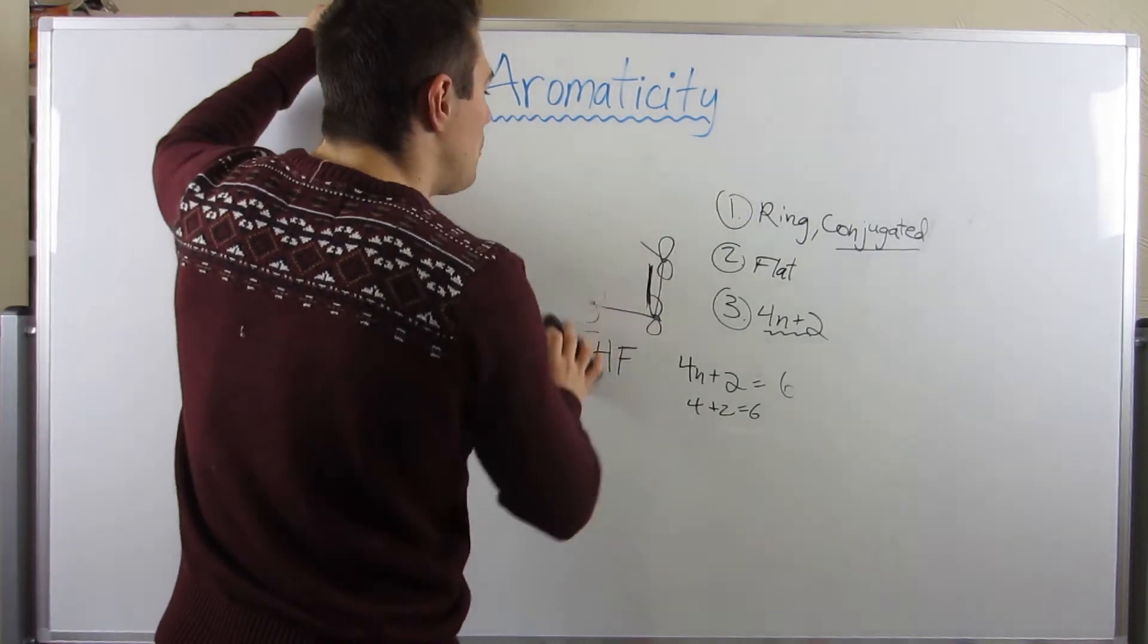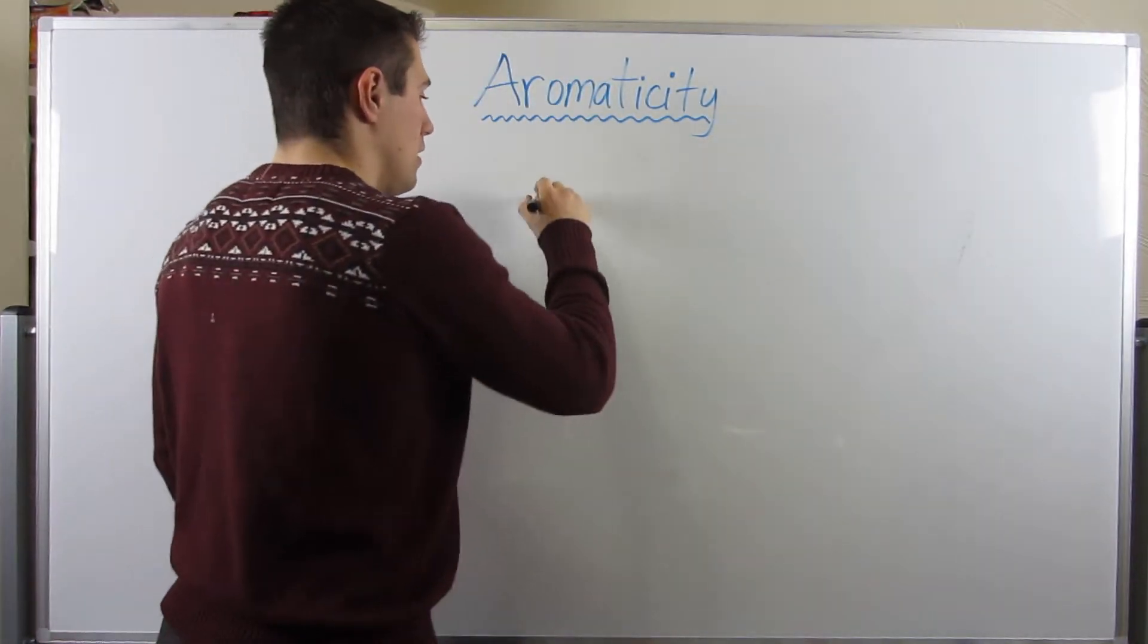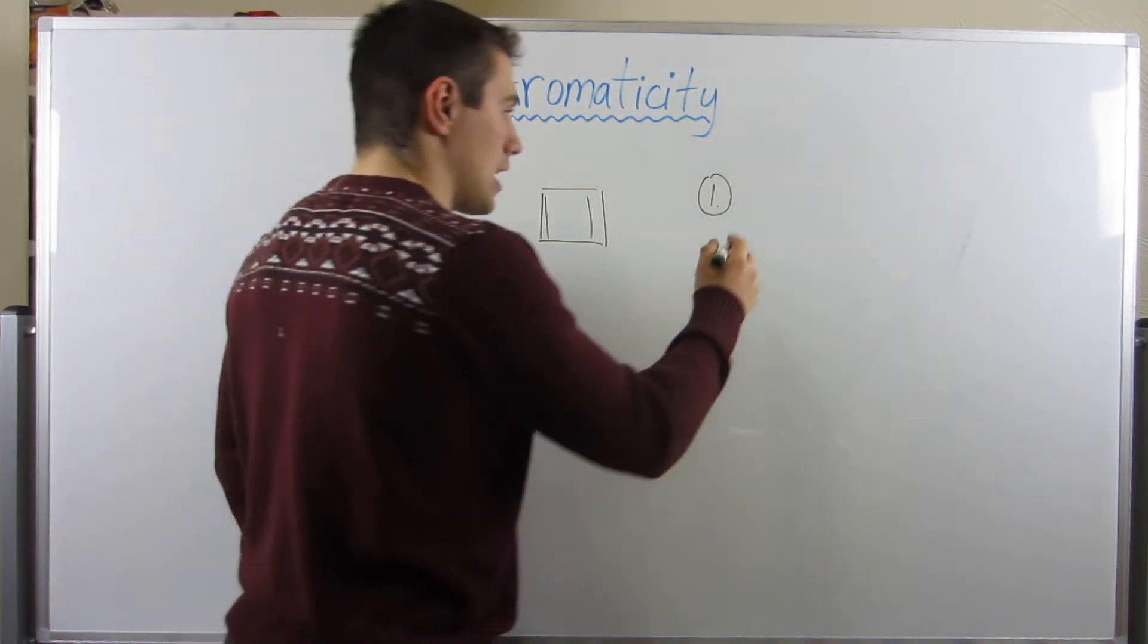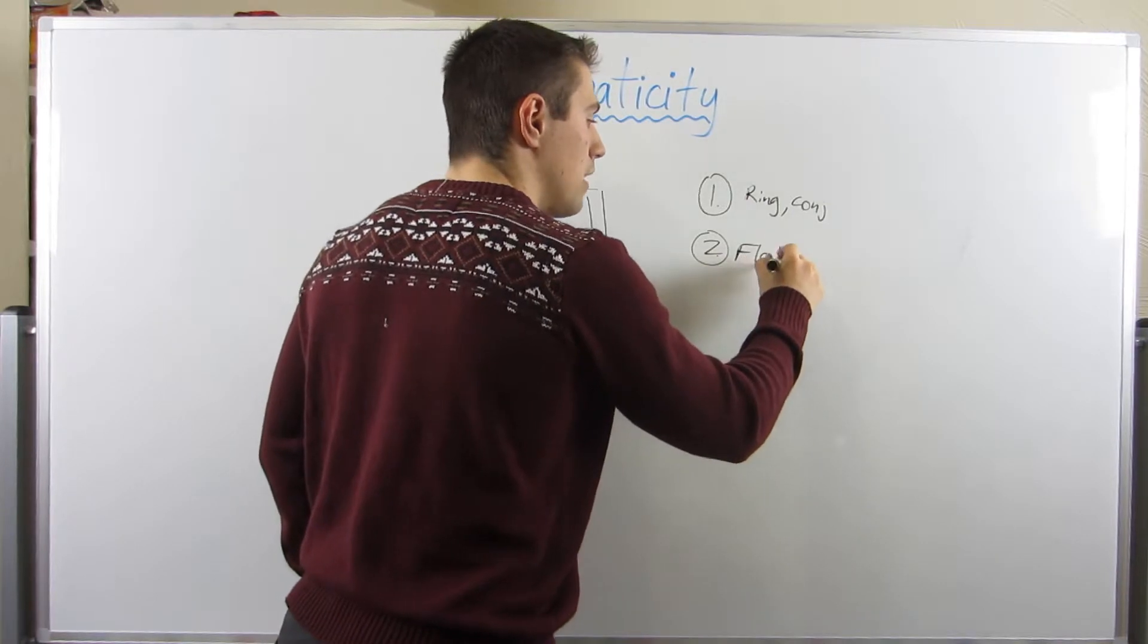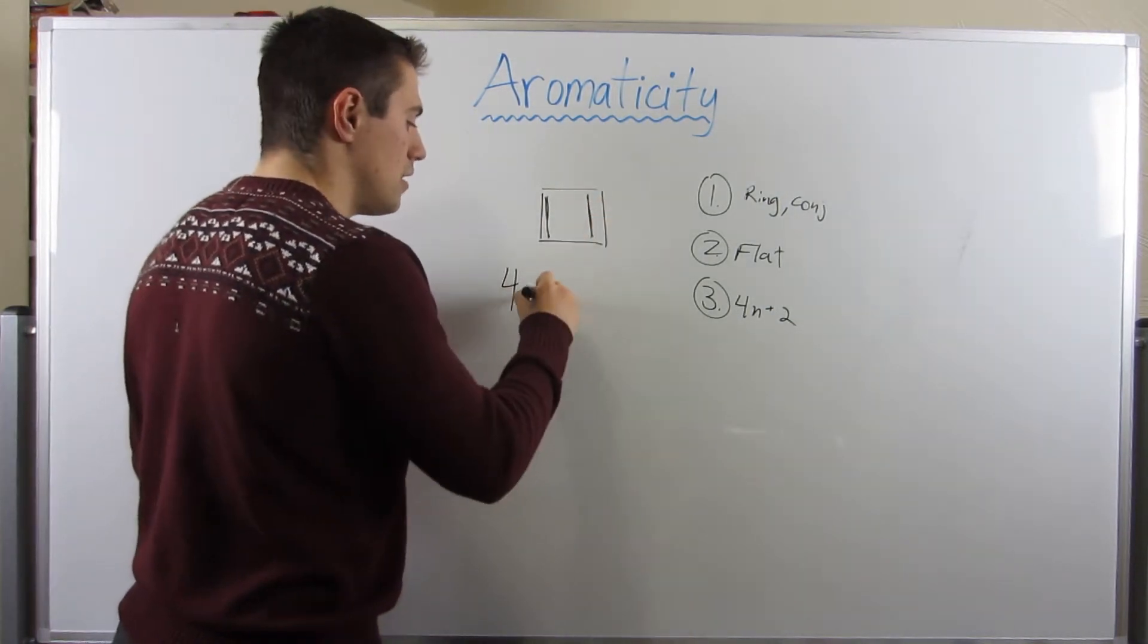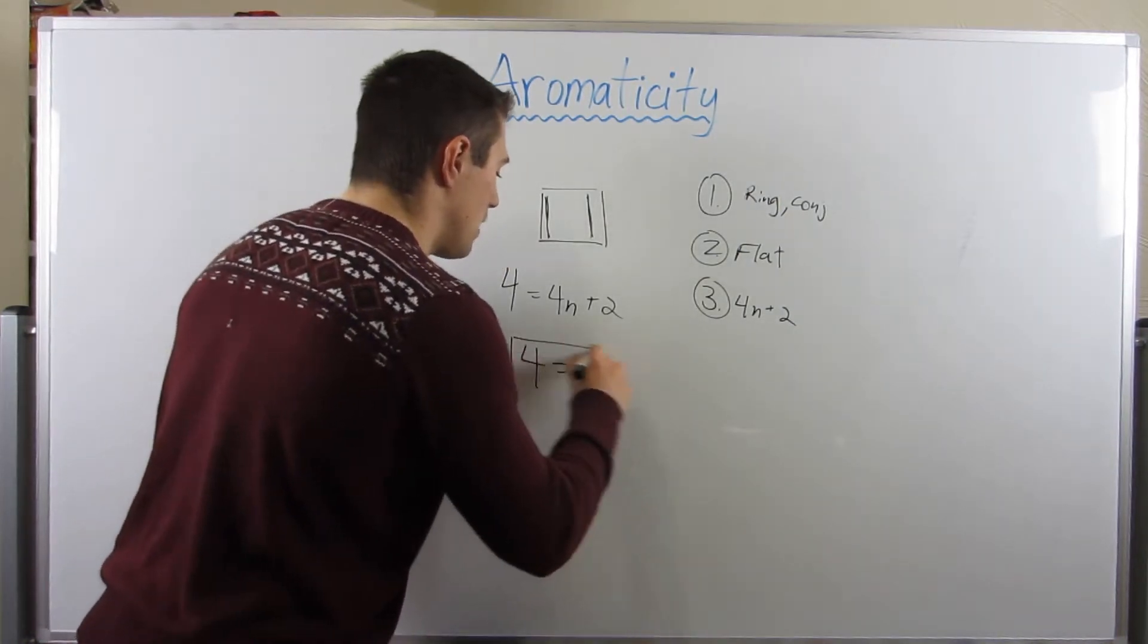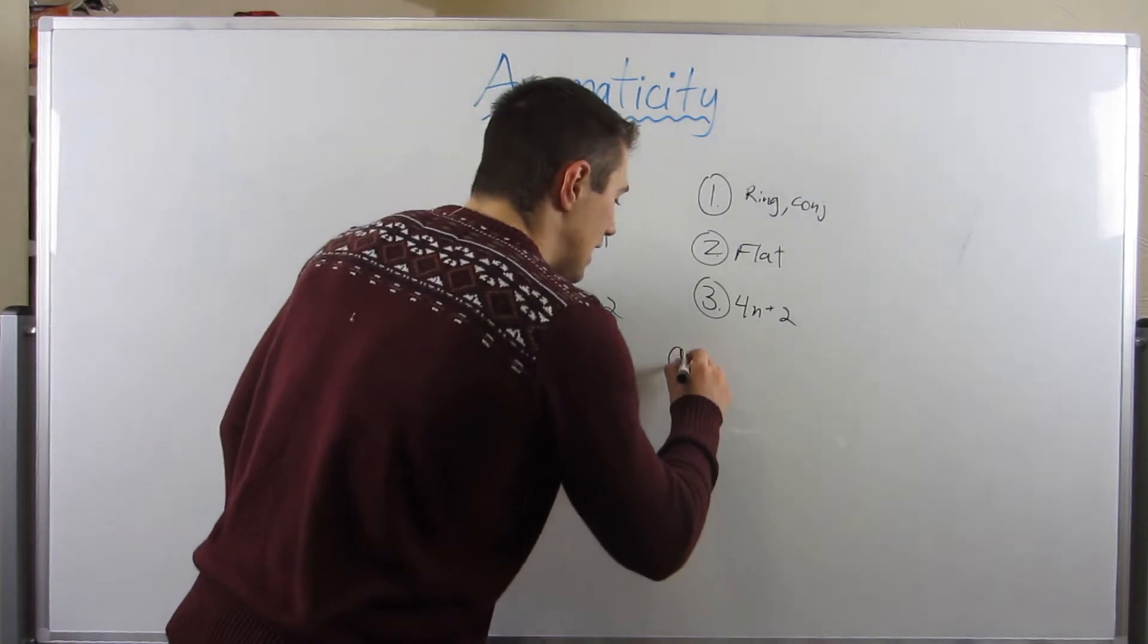However, what happens when we don't have the 4n plus 2? What if we just satisfy 4n? Well, that's a little bit of a problem. Let's look at this four-membered ring right here. This is a cyclobutadiene derivative. So let's go through our rules. Are we conjugated and are we a ring? Yes, we are. We are a ring, and we are conjugated, which means we are flat. However, do we satisfy the 4n plus 2 rule? And no, because we have four pi electrons, and that doesn't satisfy 4n plus 2. There's no combination of n being an integer that satisfies it. However, what we do do is satisfy the 4n rule. And if that's the case, if you satisfy conditions one, two, and the 4n rule, you are said to be anti-aromatic.